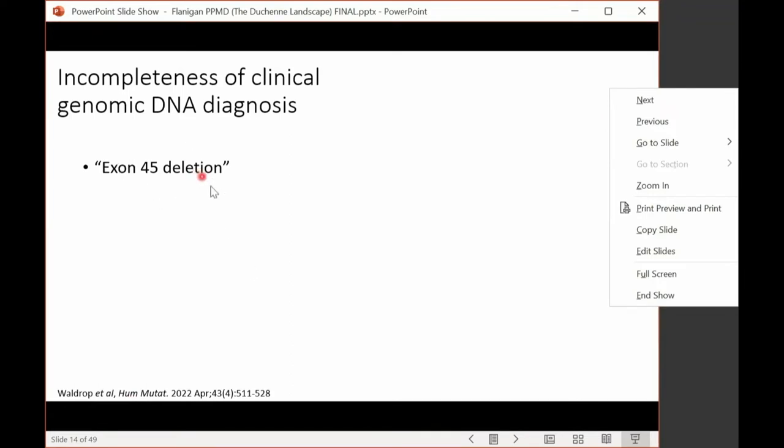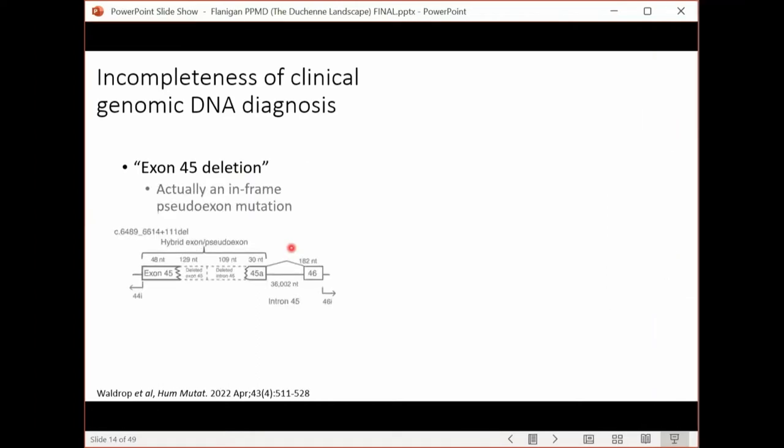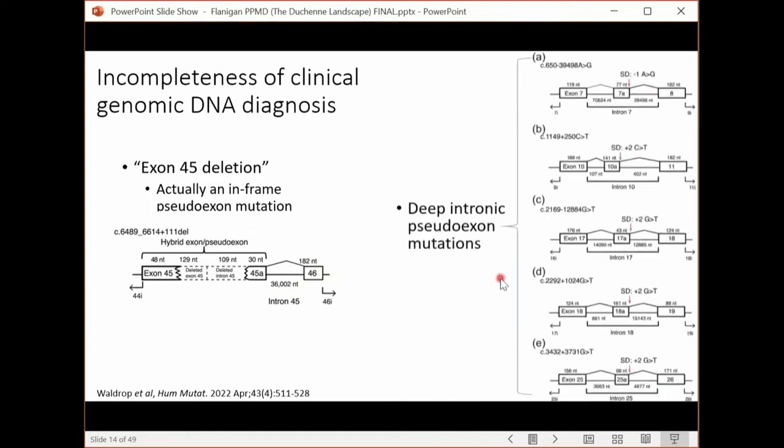Another key thing when thinking about muscular dystrophy diagnoses is that there is still incompleteness of clinical genomic DNA tests. I'm going to show an example from a recent publication we put out this year, which a patient was said to have an exon 45 deletion based on the clinical test he had performed. And in fact, he actually had an in-frame pseudo-exon mutation. The method that the test was performed with suggested all of exon 45 was absent. But in fact, part of exon 45 was there, and another part of intron 45 was included.